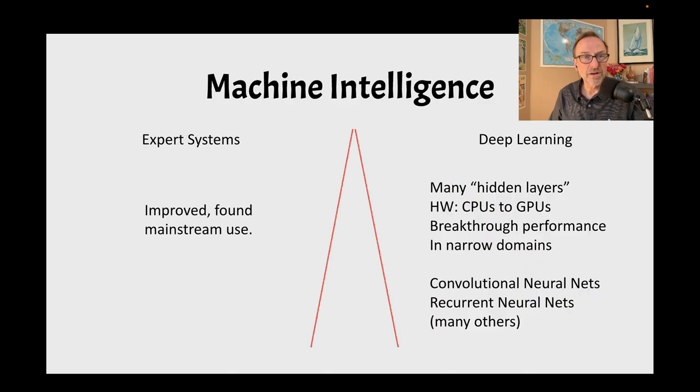What happens is a little bit later, expert systems get better and start to find mainstream use, but all of a sudden neural networks, because of a few people still working in the field, found they could start to architect hidden layers, multiple layers into their systems, and this became known as something called deep learning, depth being the interesting word here. They got some boost because instead of just using computer CPUs, they got to use graphic processors, GPUs, and that added a lot of speed, and they got breakthrough performance in some narrow domains, so if you really applied this intelligence to something specific, it got really good. Out of this, we got some variants of neural nets called convolutional neural nets, recurrent neural nets, and a series of others.